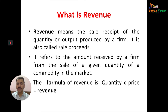The formula of revenue is quantity multiplied by price. The total quantity multiplied by the total price gives the total revenue of a firm. The quantity produced by the firm multiplied by the market price is equal to revenue. So revenue = quantity × price.